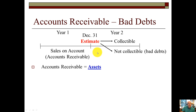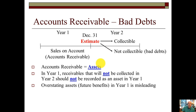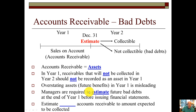Accounts receivable is an asset because it possesses future economic benefit. In year one, the receivables that will not be collected in year two should not be recorded as an asset in year one, otherwise we'd be overstating our accounts receivable. So we have to state our accounts receivable at what we expect to collect in the future. Overstating assets in year one is misleading to investors and people that read our balance sheet. Managers are therefore required to make an estimate of future bad debt at the end of year one before issuing financial statements. The estimate reduces accounts receivable to amounts expected to be collected, or what we call net realizable value — NRV.